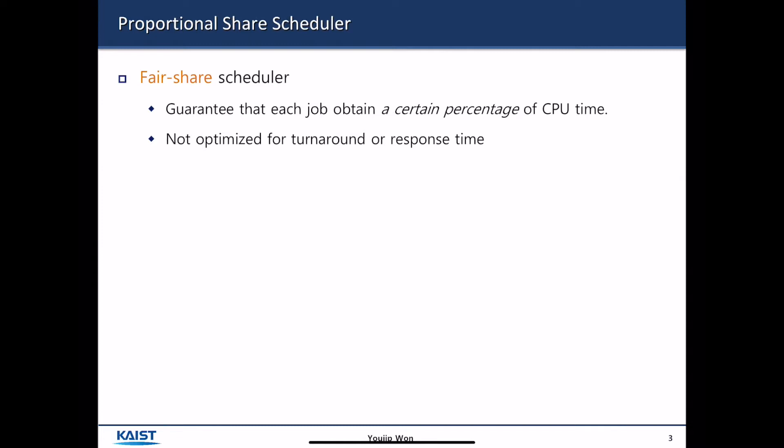In Proportional Share Scheduler, the CPU scheduler wants to guarantee that each job obtains a certain percentage of CPU. The important keyword here is guarantee. For example, if there are two jobs, then you want to allocate CPU cycles 70% to A and 30% to B.